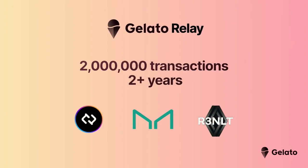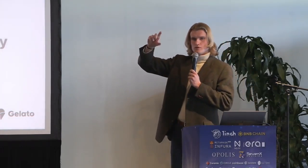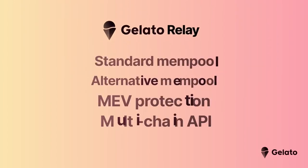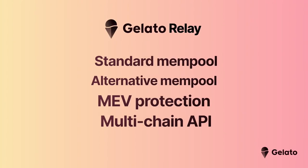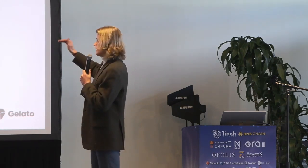Gelato Relay handles the transaction inclusion pipeline in the background. ERC-4337 is an alternative way of handling transactions, but because you just send through a Web2 request — basically a request body saying what chain, what target address, what function you want to call — this gives you flexibility in the backend to offer different options. Gasless Wallet will support the alternative mempool out of the box on day one. We already support Flashbots for MEV protection on mainnet, and we can support the alternative mempool, with our API being immediately multi-chain.